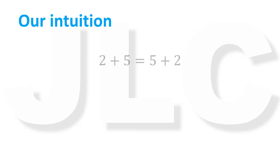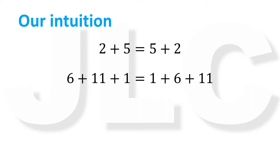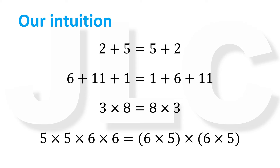Some properties of real numbers are like common sense to us. For instance, we know that 2 plus 5 is the same as 5 plus 2. 6 plus 11 plus 1 is the same as 1 plus 6 plus 11. 3 multiplied by 8 is equal to 8 multiplied by 3. 5 times 5 times 6 times 6 yields the same result as 6 times 5 times 6 times 5.